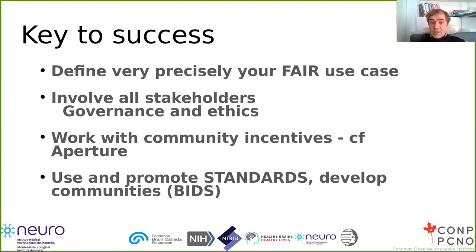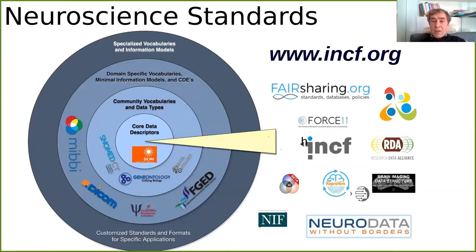We absolutely have to have a common language to search for datasets, and that cannot be done without proper standards and communities that adopt those standards. In the neuroimaging community, we have a fantastic example — the Brain Imaging Data Structure, BIDS — which has now spread around the world and gives us a way of describing datasets in a standard way. We really have to engage with those communities and standardization efforts if we want our data to be FAIR. I would point to the International Neuroinformatics Coordinating Facility, INCF, based in Stockholm, as they are the ones stamping standards as proper, useful, and documented.